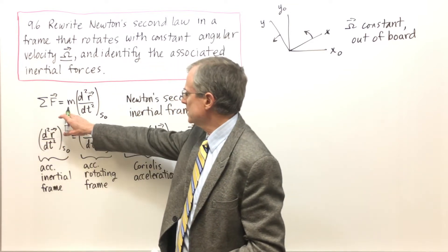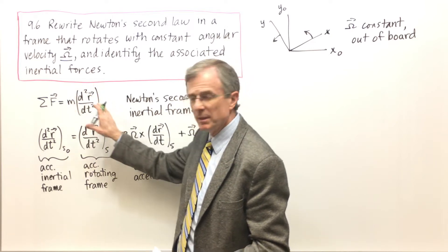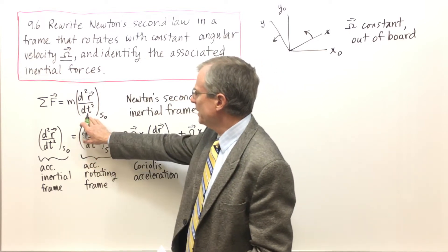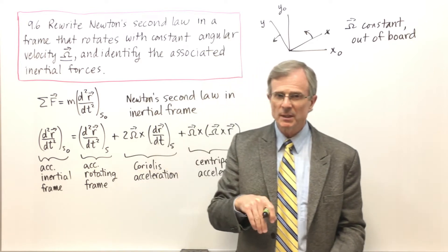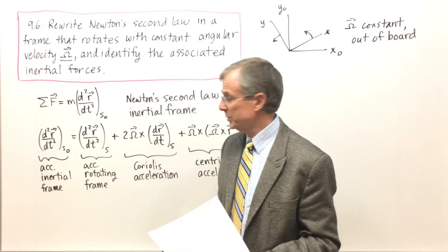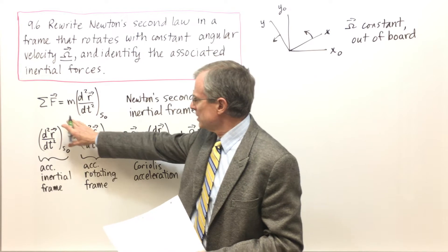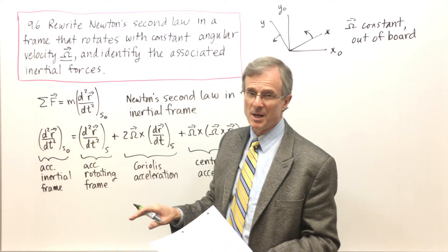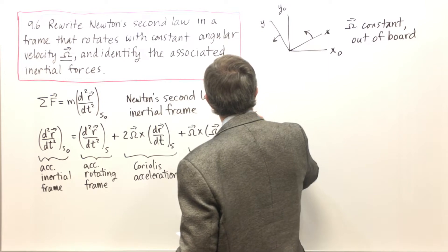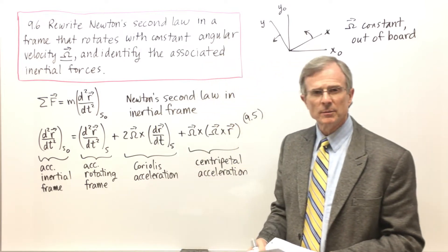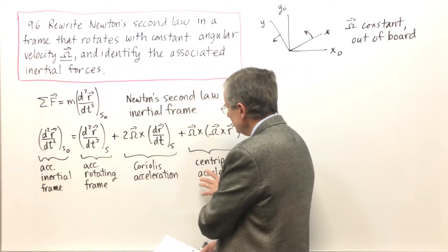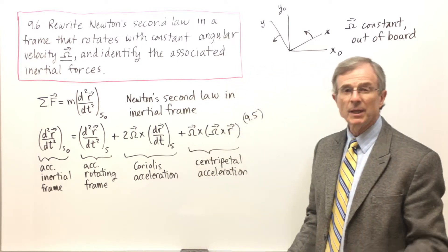This is Newton's second law as expressed in the inertial frame — sum of forces equals mass times the acceleration — and we've written this acceleration in a careful way to distinguish whether we're taking the derivatives from the point of view of the inertial observer or the rotating observer. We know that in an inertial reference frame Newton's second law applies, and in the last concept we related the accelerations in the inertial frame and the rotating frame, getting two extra terms which I'd like to identify now.